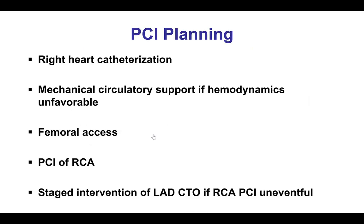As a result, the patient was referred for PCI, which had multiple considerations, including the need for right heart catheterization and possible hemodynamic support. The plan was to do first the culprit lesion, which is considered to be the right coronary artery, and then do the LAD if the RCA intervention was uneventful at a later time.